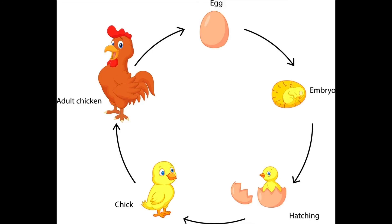A rooster fertilizes eggs before a hen lays them. The hen will care for the fertilized eggs and keep them warm. After 21 days, the eggs will hatch and new chicks will emerge. Now that you know more about the life cycle of a chicken, which do you think came first — the chicken or the egg?